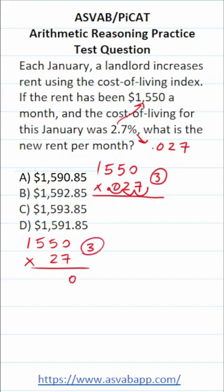0 times 7 is 0. 5 times 7 is 35, so bring down a 5, carry a 3. 5 times 7 is 35, 36, 37, 38, bring down an 8, carry a 3. 1 times 7 is 7, plus 3 is 10.